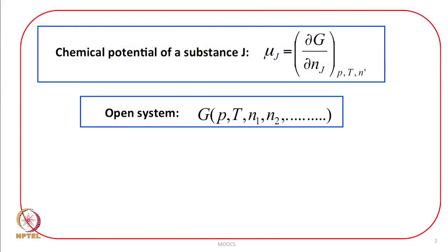Since we are talking in terms of changes in compositions, that means we are now talking about the open system — we are allowing the composition to change. Therefore, in an open system the Gibbs energy will depend upon pressure, temperature, number of moles of component 1, number of moles of component 2, etcetera.